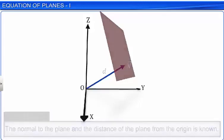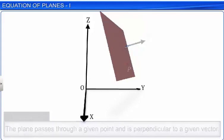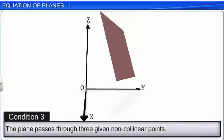We can also determine a unique plane if the plane passes through a given point P and is perpendicular to a given vector n. A unique plane can also be determined if it passes through three given non-collinear points A, B and C.